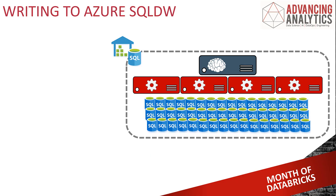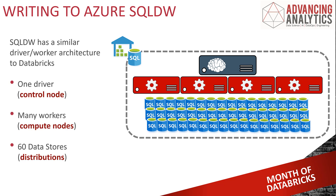So let's have a bit of a recap. SQL Data Warehouse has got a couple of different layers and the top two layers are very similar to what we've been looking at in Databricks. You've got that top brain layer, and in Data Warehouse this is called a control node. Then you've got several different worker layers underneath — these are your compute nodes. Similar to our driver and workers in Spark, we have a control node and compute nodes.